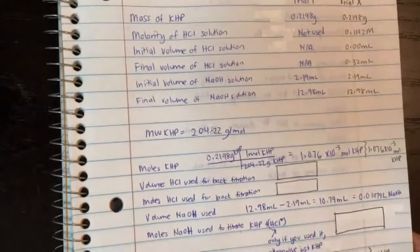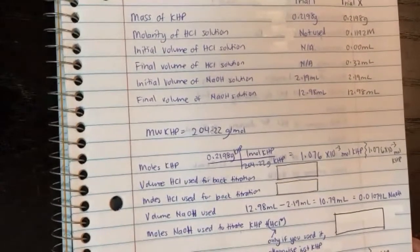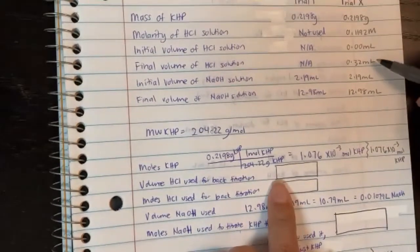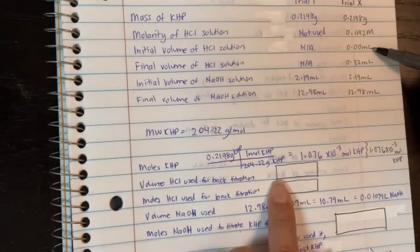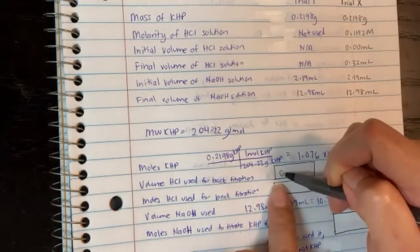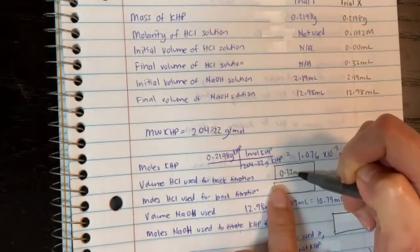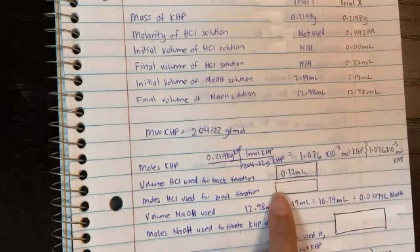Now, the next step is obviously different because earlier we did not have any volume of HCl, but this time we do. So to do a volume of HCl, you will take final volume of HCl minus initial volume of HCl, which is 0.32 milliliters minus 0.00 milliliters. So I'll end up getting 0.32 milliliters.